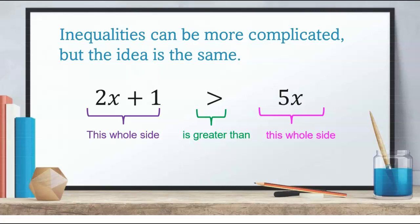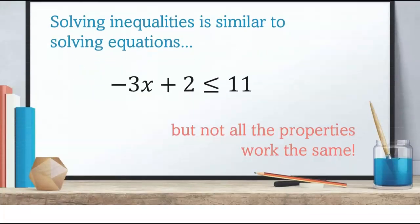Inequalities can be more complicated — they can look like equations. For example, 2x + 1 > 5x. But the idea is the same: there's a number hiding on each side, and it's saying this number is bigger than that number. If we can set these up like equalities, we should be able to solve them like equalities. The only tricky thing is that not all the properties work the same, and we need to know which ones work differently.